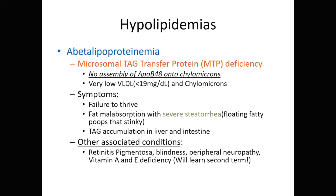Another hypoproteinemia is abetalipoproteinemia. This is due to a deficiency in the microsomal triglyceride transfer protein, or MTP. MTP is required to assemble ApoB48 onto chylomicrons. Without it, we have no chylomicrons. So in a clinical stem, when someone has absent chylomicrons even after eating, look for ApoB48 deficiency along with MTP deficiency genetically.